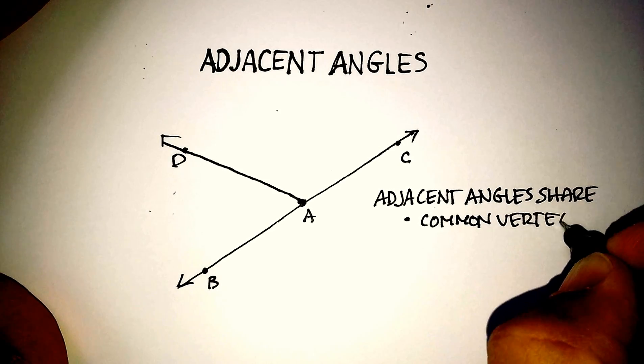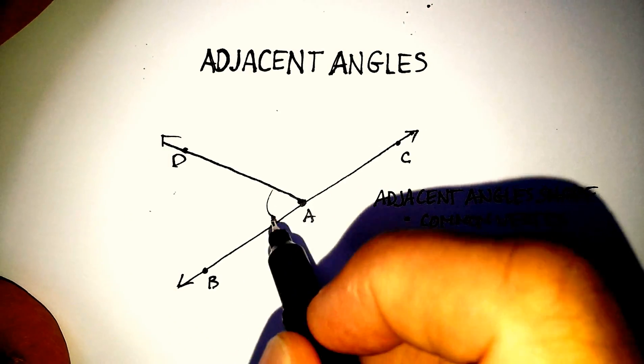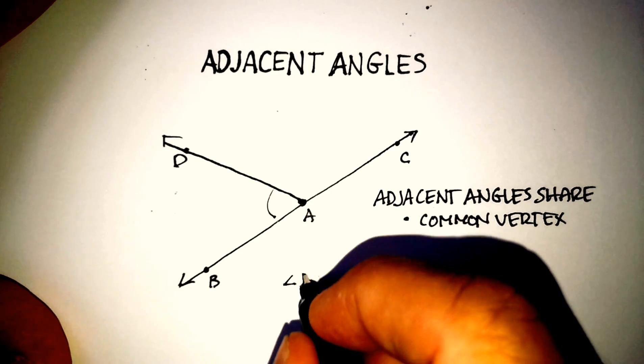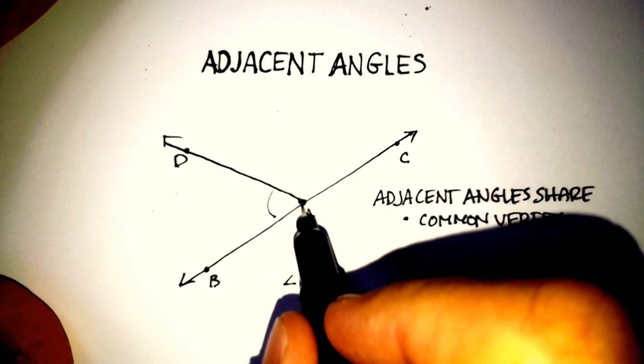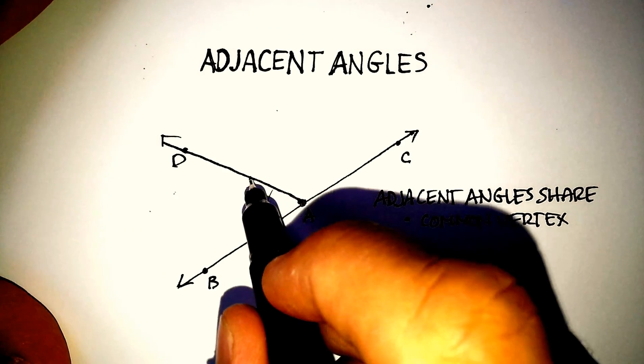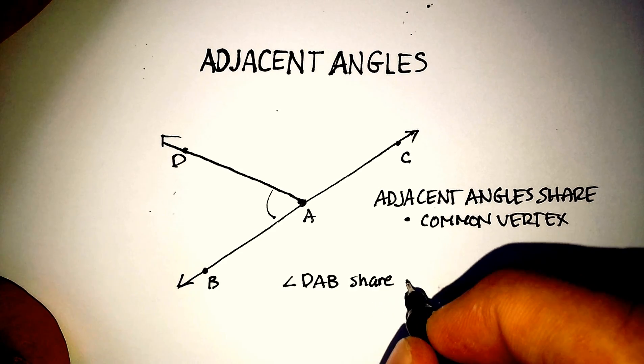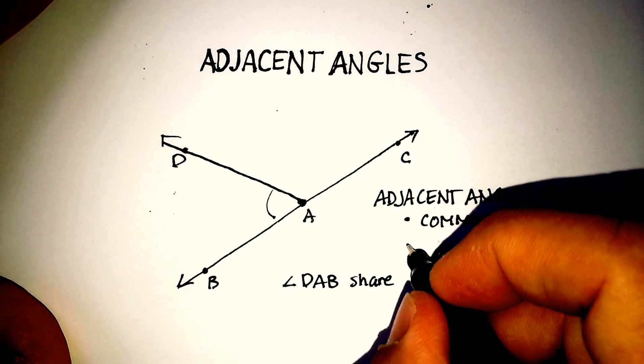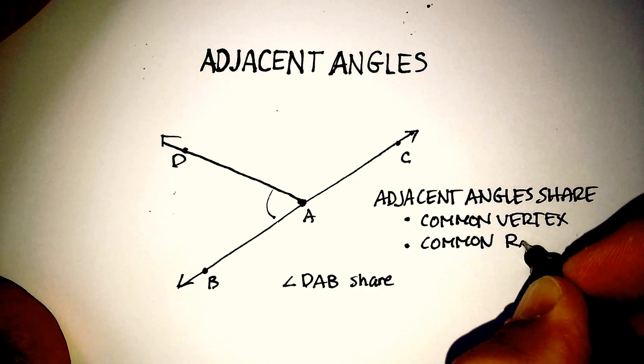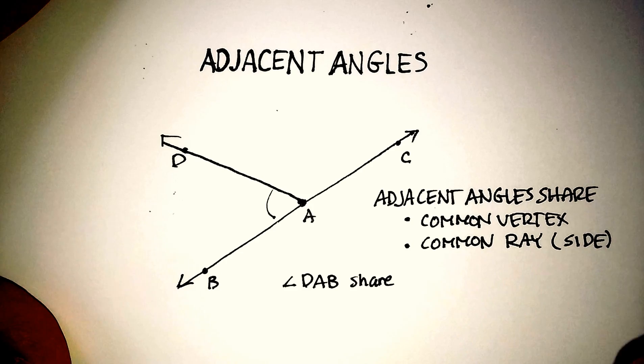What else do they share? Well, they share a common ray, because this angle here we call that DAB. So angle DAB also shares a common side or a common ray with angle DAC. So they might have a common ray, and if you want to think of that as a side, that's okay too.